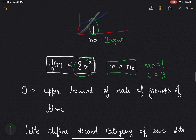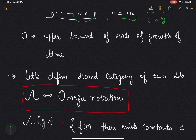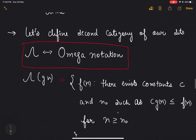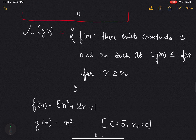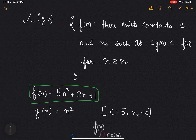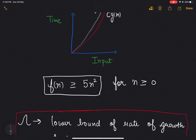Let's define the second category, which we call Omega notation. Here, given f(n), there exist constants c and n₀ such that c·g(n) ≤ f(n) for n ≥ n₀. Using the same function f(n) = 5n² + 2n + 1 and g(n) = n², if we set c = 5 and n₀ = 0, then f(n) is always greater than or equal to 5n² when n₀ = 0.